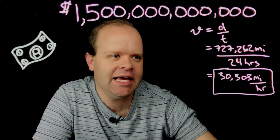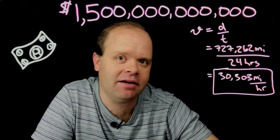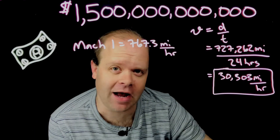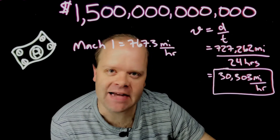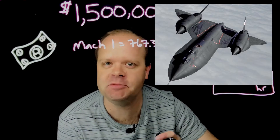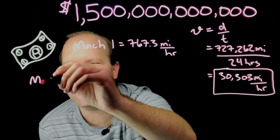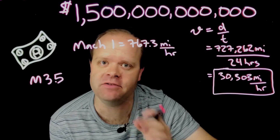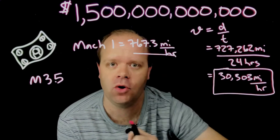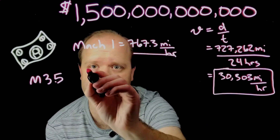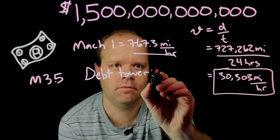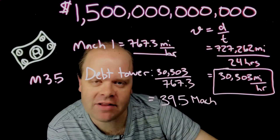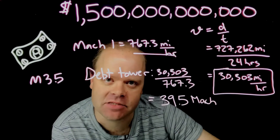Mach numbers, or how many times the speed of sound, are used to put numbers like this into perspective, where Mach 1 is about 767 miles per hour. The world record for fastest jet goes to the SR-71 Blackbird with a top speed of Mach 3.5 — that's 3.5 times the speed of sound. Our debt tower is traveling at 39.5 times the speed of sound.